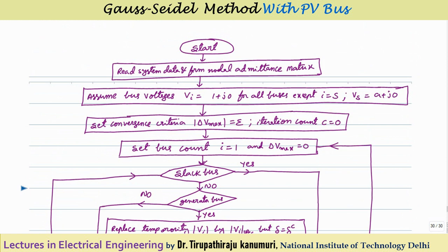Now let us examine the flowchart for the complete Gauss Seidel algorithm. Start the program, read system data, and form the nodal admittance matrix. Assume flat voltage profile (1 + j0, i.e., 1∠0°) for all buses except the slack bus, which is taken as its specified value A∠0°. Fix the convergence criterion: stop when ΔV_max ≤ ε. Set iteration count C = 0, bus count i = 1, and ΔV_max = 0.